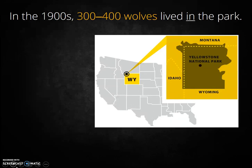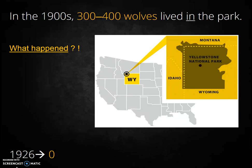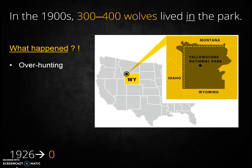In the early 1900s there were 300 to 400 wolves living within the boundaries of Yellowstone National Park. Then by 1926 there were zero. What happened? Well there were several things. First, intentional overhunting — the United States predator control program killed over 136 wolves from 1914 to 1926.